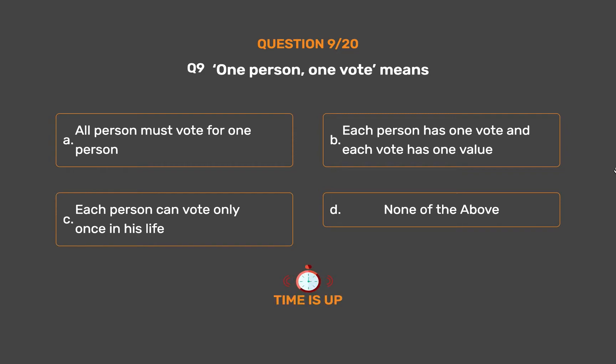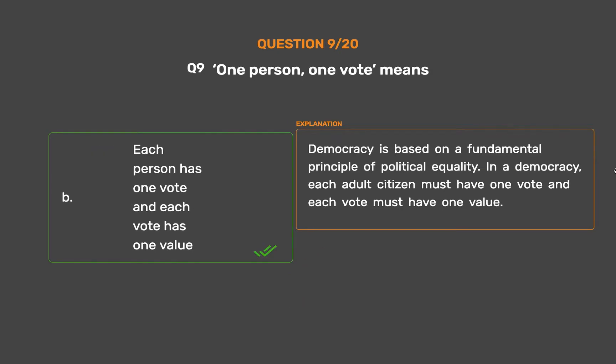The correct answer is Option B: Each person has one vote and each vote has one value. Democracy is based on a fundamental principle of political equality. In a democracy, each adult citizen must have one vote and each vote must have one value.